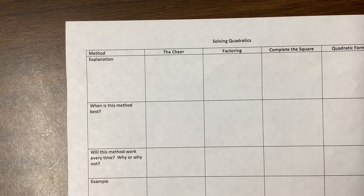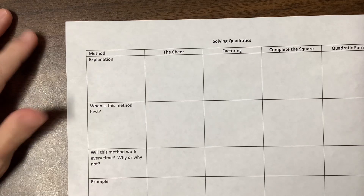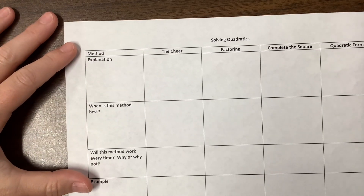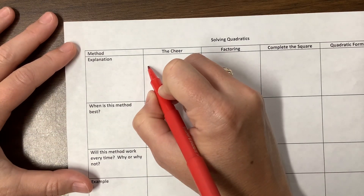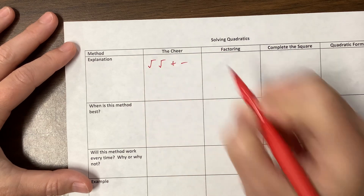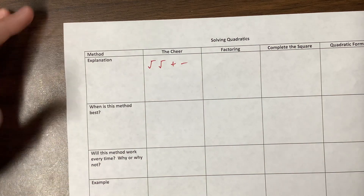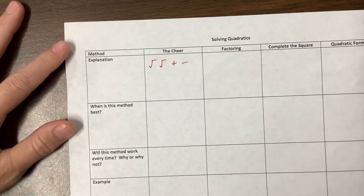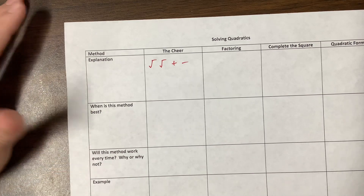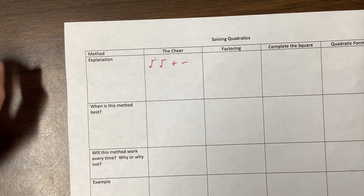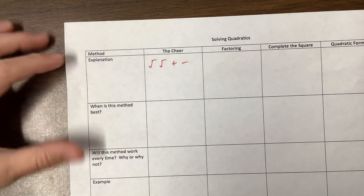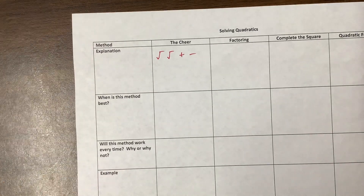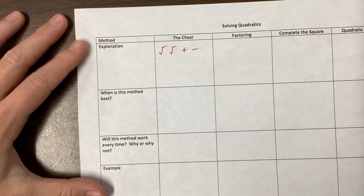The first thing — I wish that you were in my class to see us do the cheer. The idea with the cheer is that we go: square root, square root, plus, minus. We do our arms like a square root sign on one side, switch to the other side, then do our arms like a plus and then a minus sign. I'm happy to do it for you in the classroom, but doing it on video for the whole world to see makes me nervous.